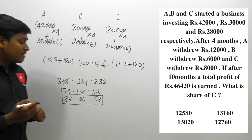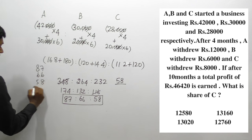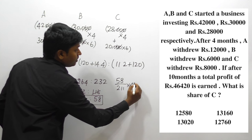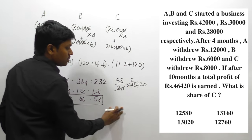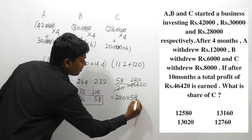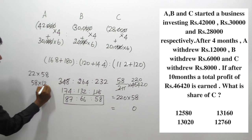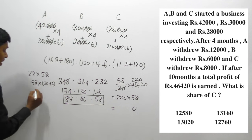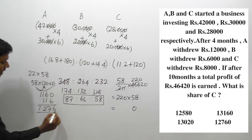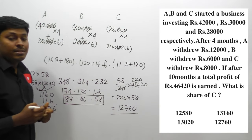C's share = 58 / (87 + 66 + 58) × 46,420 = 58/211 × 46,420. Simplifying: 46,420 / 211 = 220. Then 220 × 58 = 12,760. So the share for person C is rupees 12,760.